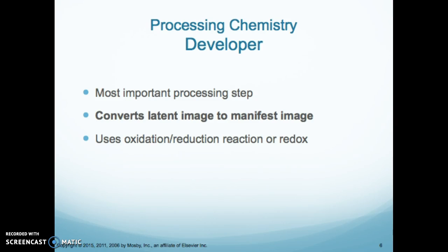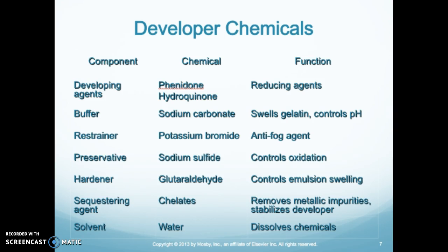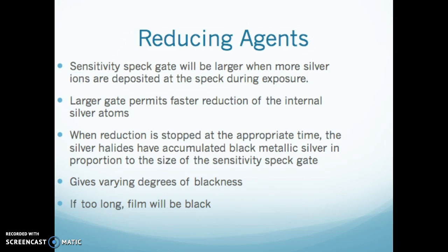The developer uses a redox reaction to convert the image. The ART has stated you no longer need to know the specific chemicals, but you need to know the function of each step. Your developing agents are reducing agents. Your buffer swells the gelatin and controls pH. The restrainer is an anti-fog agent. Your preservative controls oxidation. Your hardener controls the emulsion and swelling. Your sequestering agent removes metallic impurities and stabilizes the developer. Your solvent dissolves the chemicals.